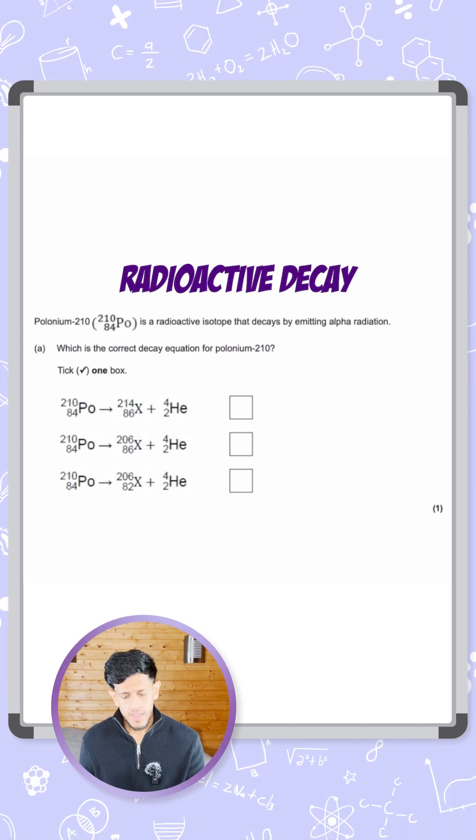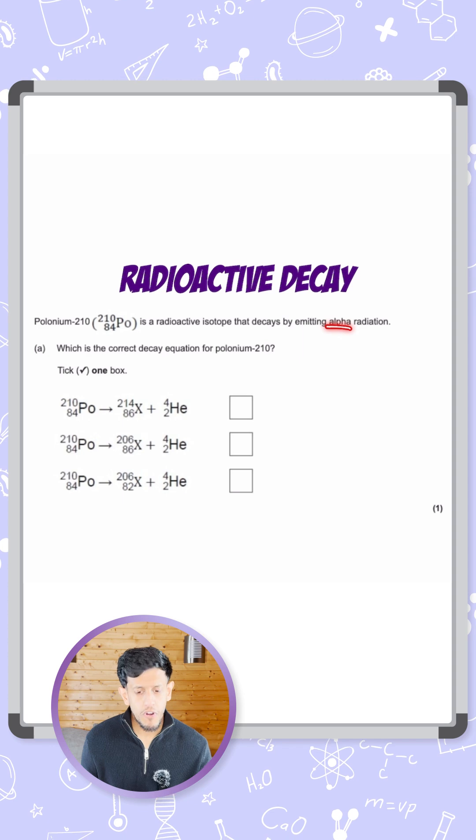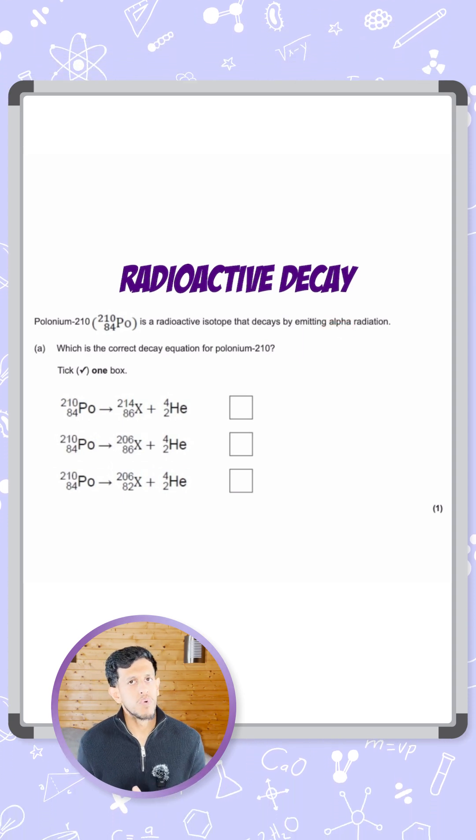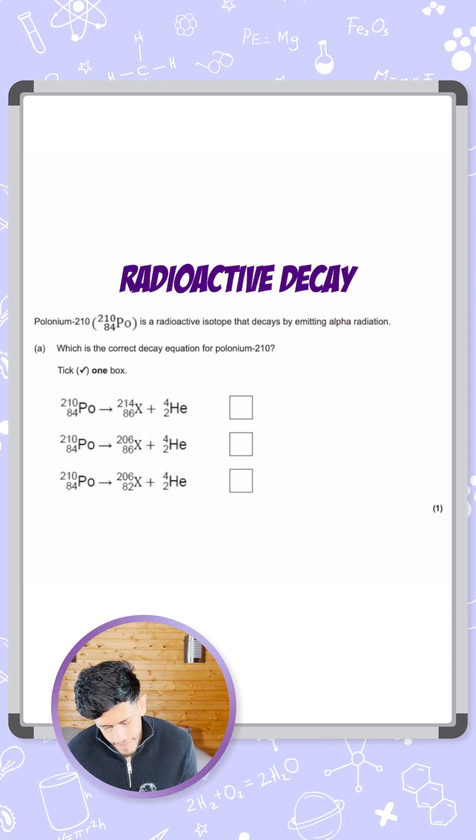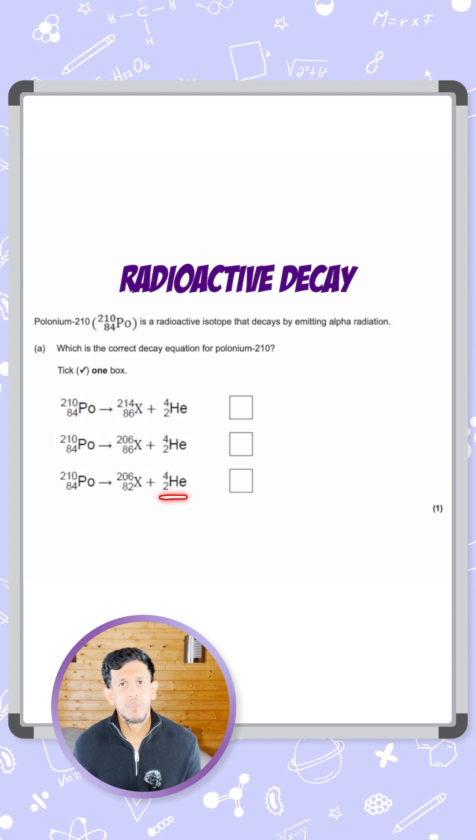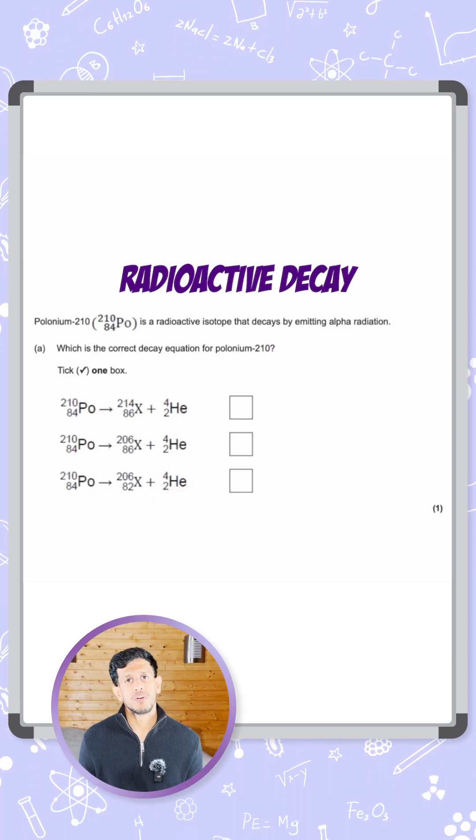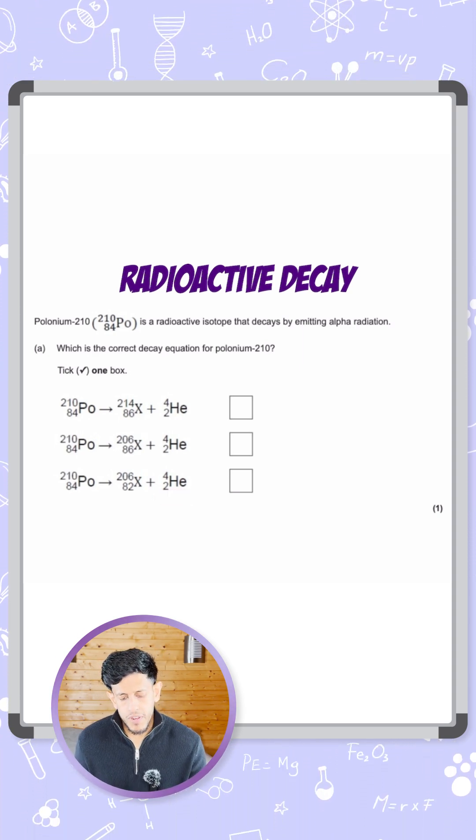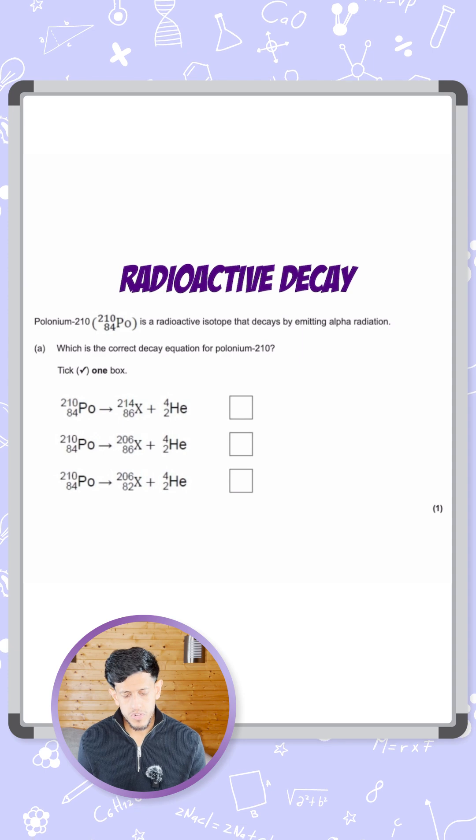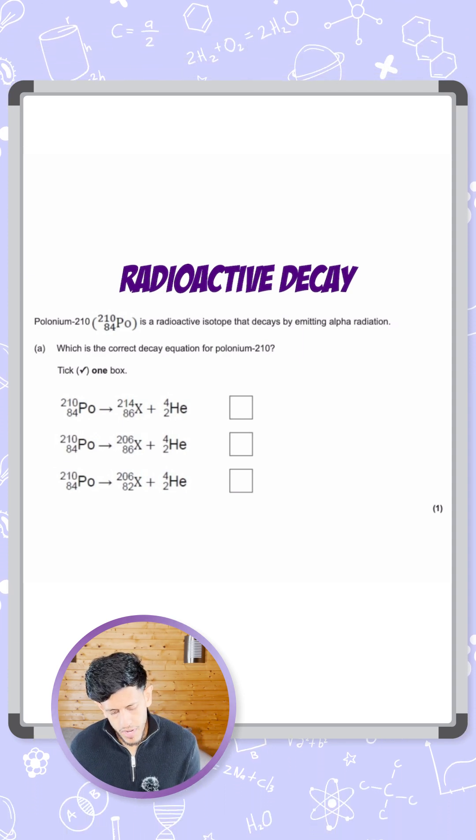The key thing to note here - all three, because it's the decay of alpha - on the product side, the right-hand side of the equation, we have the alpha particle helium, mass number 4, atomic number 2. And obviously for polonium they've given us the mass number and atomic number, so it's the same for all three answers here.